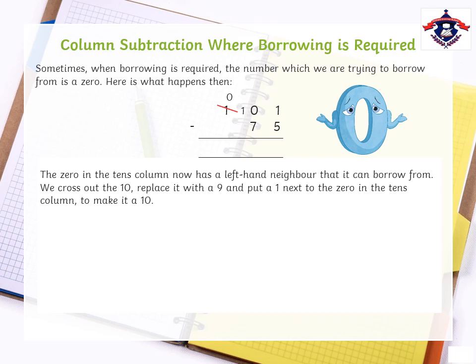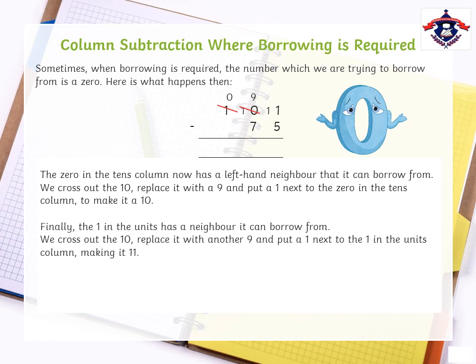The 0 in the tens column now has a left-hand neighbor it can borrow from. We cross out the 10, replace it with a 9, and put a 1 next to the 0 in the tens column, making it a 10. Finally, the 1 can now get a borrow from its neighboring partner. We cross out the 10, replace it with another 9, and put a 1 next to the 1 in the units column, making it 11. So the answer we get is 26.